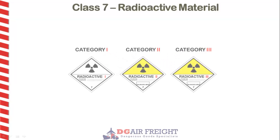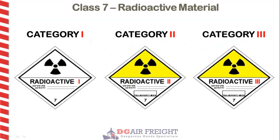Class 7 are radioactive materials, categorized into one of three categories depending on the severity of the danger of the radioactive source.